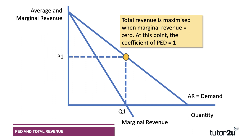Above P1 Q1 the coefficient is greater than one; below it demand is price inelastic. If we cut the price from P1 to P2, yes, we'd sell some extra units Q2 — but the fall in revenue per unit from selling at a lower price is bigger than the revenue effect of selling those extra units. So revenue goes down once marginal revenue becomes negative.